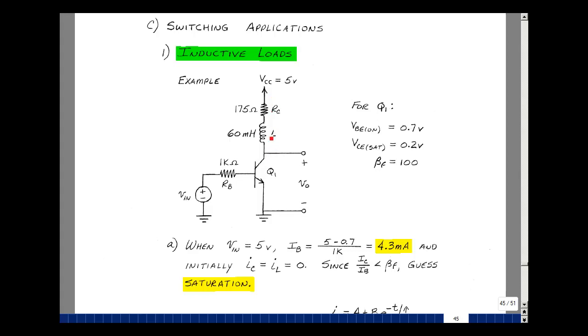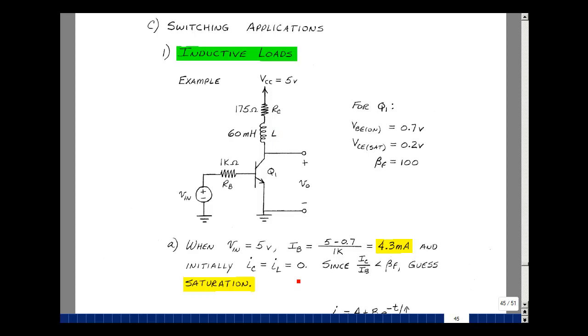Now, the current in the inductor cannot change instantaneously. And if we just turn this circuit on, the current flowing in here prior to turning it on was 0, but must still be 0. So the ratio of I sub C to I sub B is going to be 0 divided by 4.3 milliamps. And that's less than beta f, so the saturation assumption is correct.